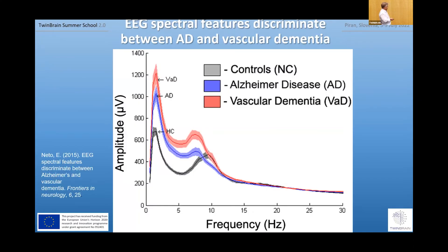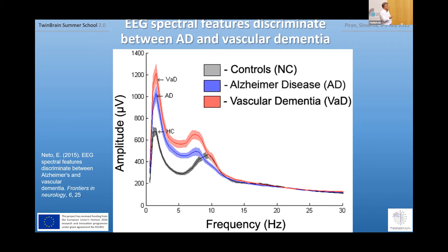Here is an example from 2015 using resting state EEG for different kinds of dementia. You have three power spectral density curves: normal controls have peak alpha around 9 Hz; Alzheimer's disease in blue and vascular dementia in red both show the peak alpha shifted to lower frequency. Interestingly, if you do differential diagnosis, the spectral power density map is different between these two groups. Most dementias are mixed dementias, and you could do this kind of comparison between vascular and Alzheimer's dementia and look for differences.